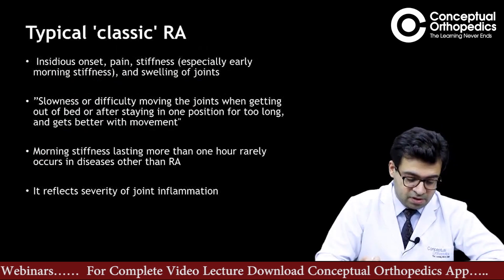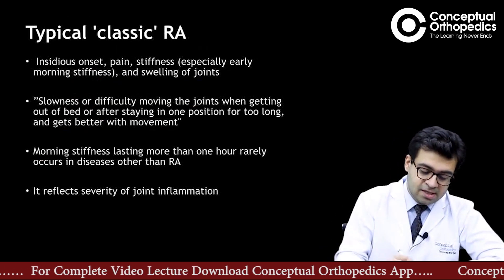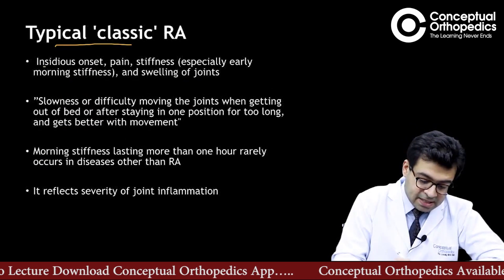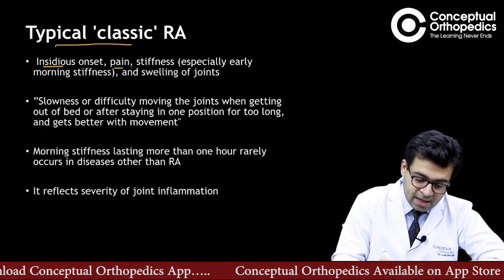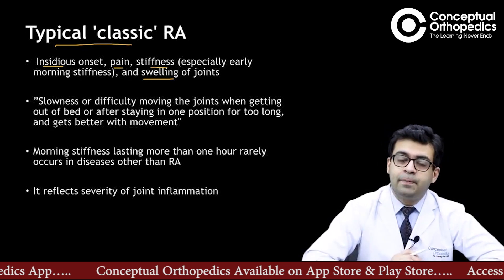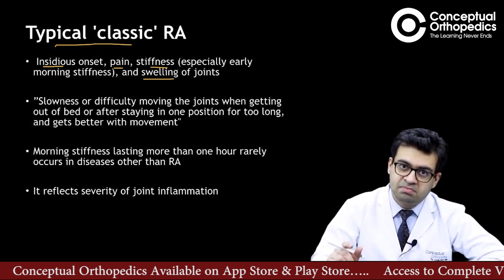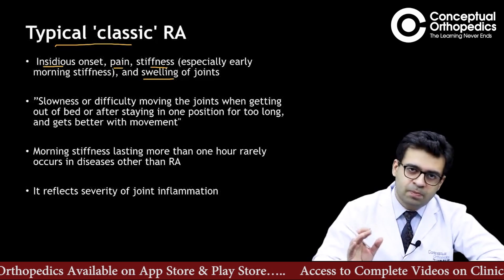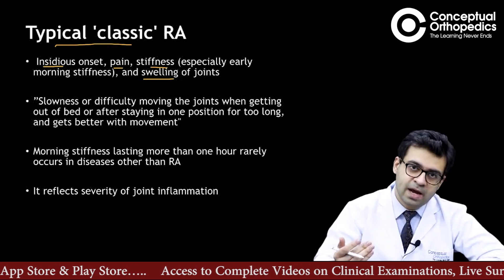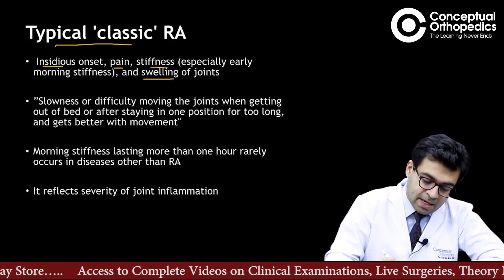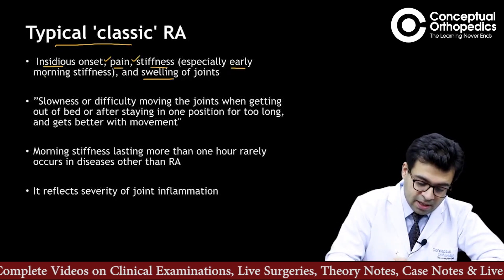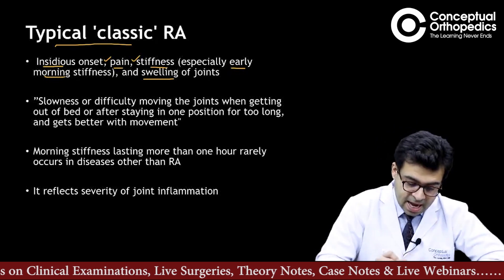Let us discuss the typical classic RA and how it presents. It is insidious onset, associated with pain, stiffness, and swelling of the joints. Insidious onset means a patient cannot tell you the exact date and time when symptoms started — it is so gradual that they cannot pinpoint an exact day. They may say maybe a few weeks or a few months back, but cannot pinpoint one particular day.